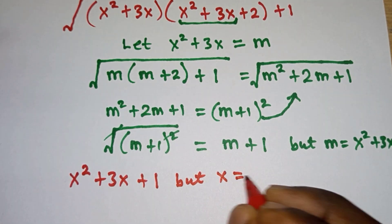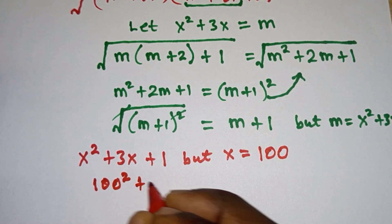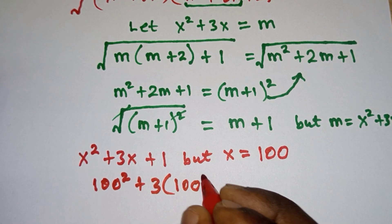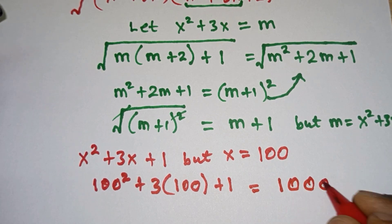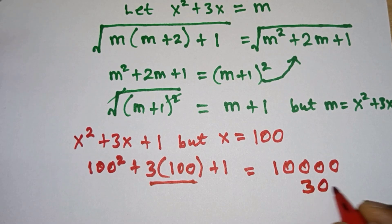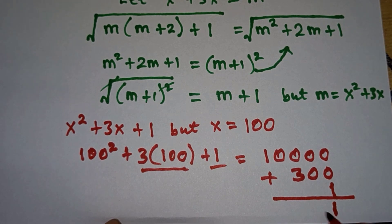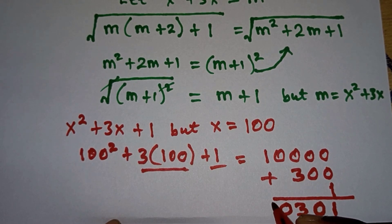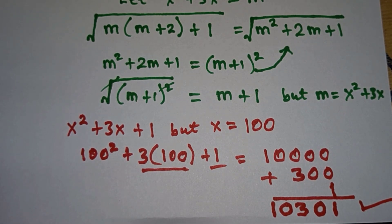But x is equal to 100, so we're going to have 100 squared plus 3 times 100 plus 1. Remember we are not using any calculator. 100 squared is 10,000, then 3 times 100 is 300, then we have plus 1. Adding these together: 10,000 plus 300 plus 1 gives us 10,301 as our final answer. Subscribe to my channel for more videos, thanks for watching, have a nice day.